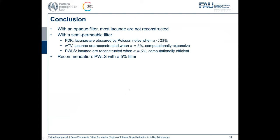In conclusion, with an opaque filter, most lacunae are not reconstructed because of missing data. With a semi-permeable filter, FDK is not sufficient to reduce Poisson noise when the transmission rate is small. WTV can reduce Poisson noise very well, however it is computationally expensive because it is an iterative reconstruction. PWLS can reconstruct the lacunae very well when alpha is as small as 5%, and it is relatively computationally efficient. Therefore, we recommend PWLS with a 5% semi-permeable filter for our future in vivo experiments.